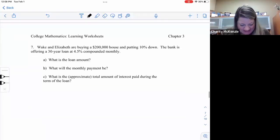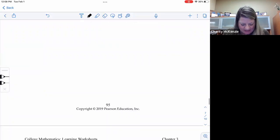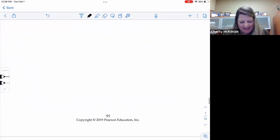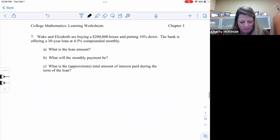Alright, so this is part two. We were looking at payments. If you have to figure out, so problem seven, if you have to figure out your own down payment, let's look through that one real quick. So Wake and Elizabeth are buying a $200,000 house. They're putting 10% down. The bank is offering a 30-year loan at 4.5% compounded monthly.